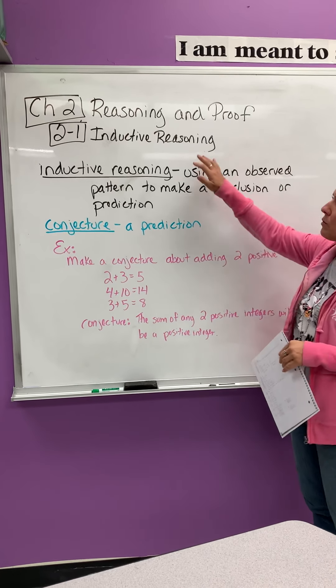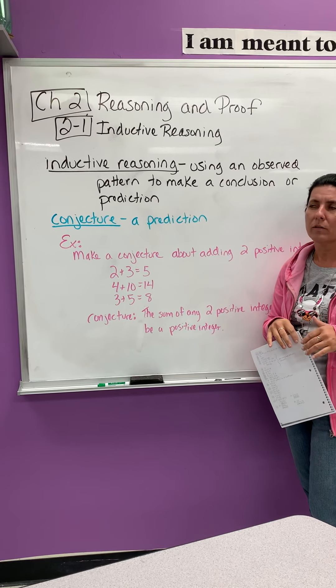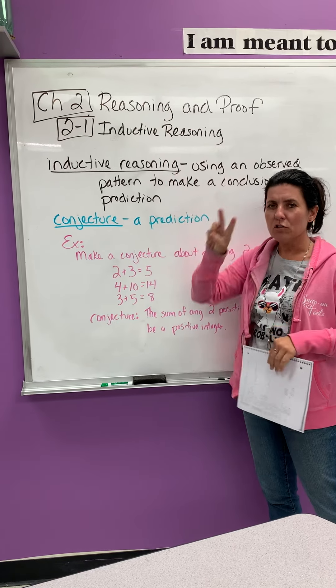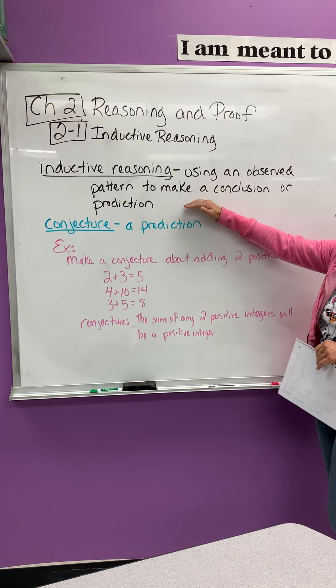So starting chapter 2, we're doing reasoning and proof. This is a logic chapter. It also has some proofs in it that we'll get to later on. 2.1 is only talking about inductive reasoning. There's two kinds of reasonings: inductive and deductive. Today we're only talking about inductive reasoning.